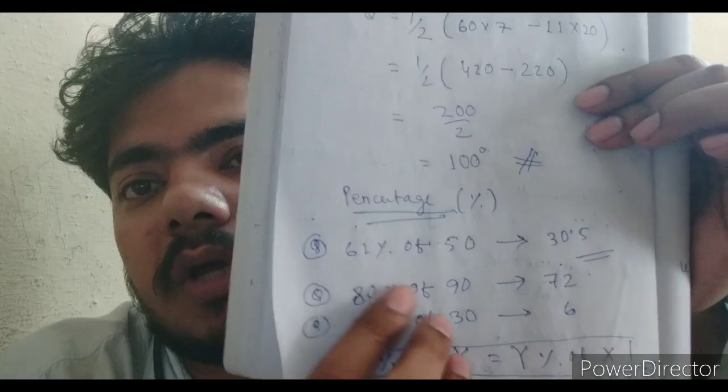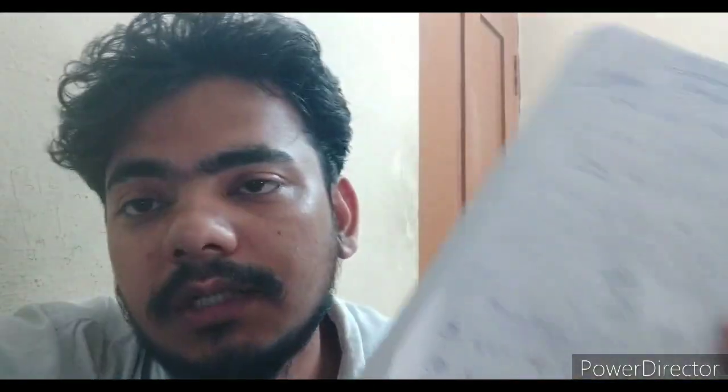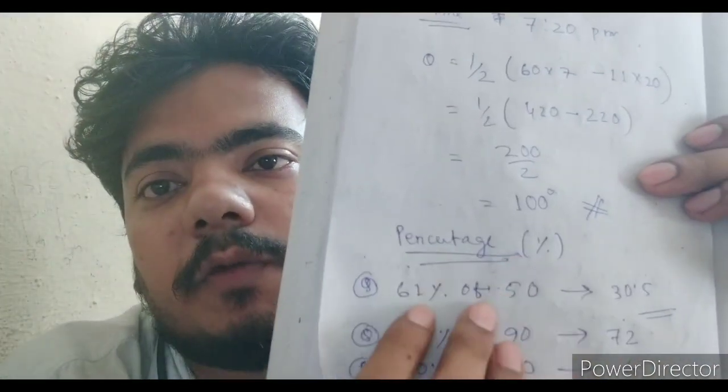The next topic is percentage, which is very common everywhere. Basically, percentage is related to 100. Suppose you got 700 marks out of 1000 in a competitive exam — you got 70 percent, because when we compare with 100 it becomes 70. Once we compare with 100, it becomes a percentage. There is also something called percentile, which is a different thing — don't confuse percentage and percentile.